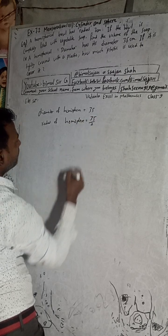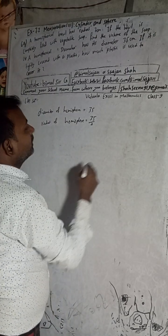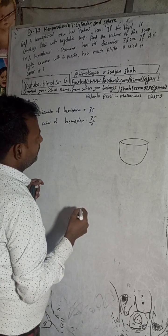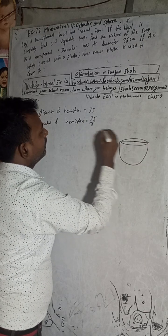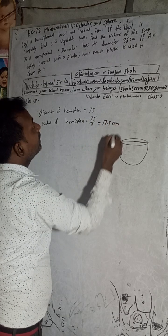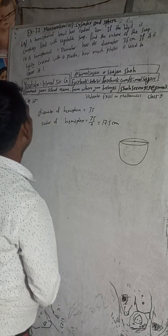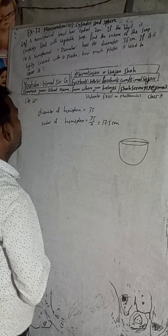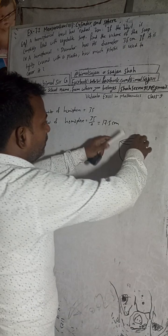That means the radius of the hemisphere is 35 by 2. A hemispherical dome — the diameter is given from here to here, that is 35, so the radius is 35 by 2, which equals 17.5 cm. Now we have to find: if it is tightly covered with plastic, how much plastic is used?